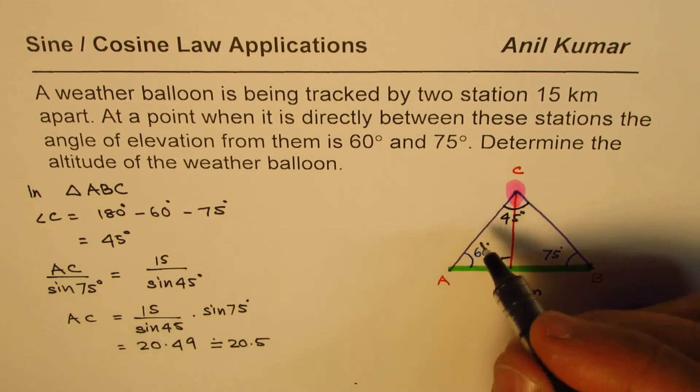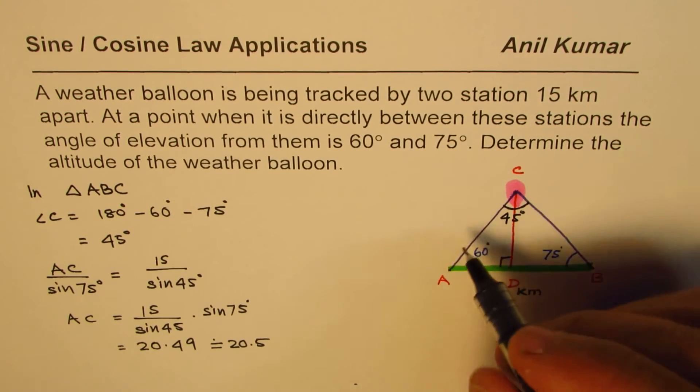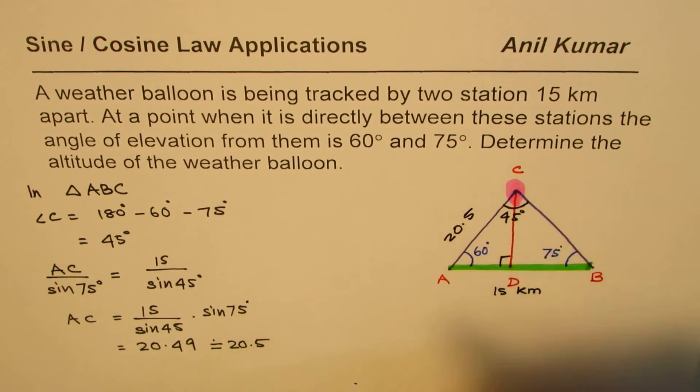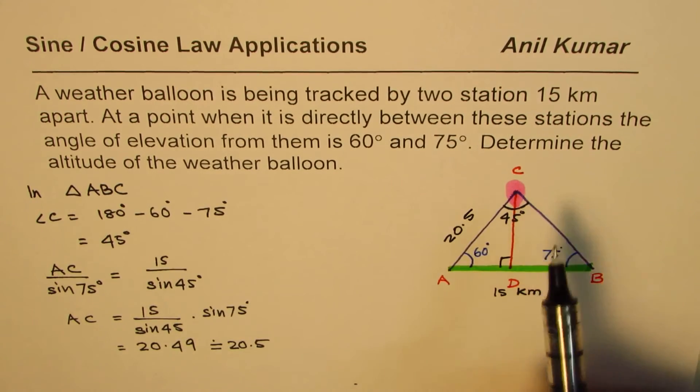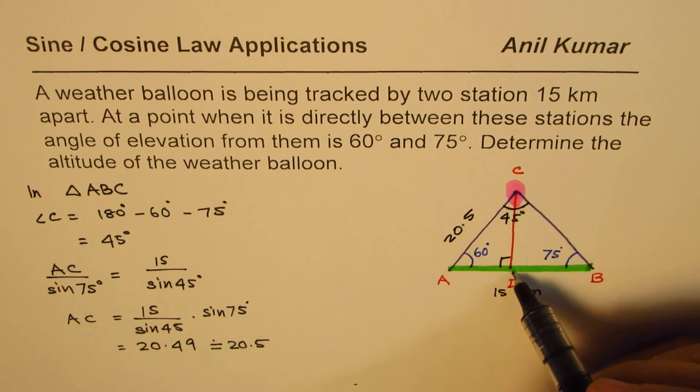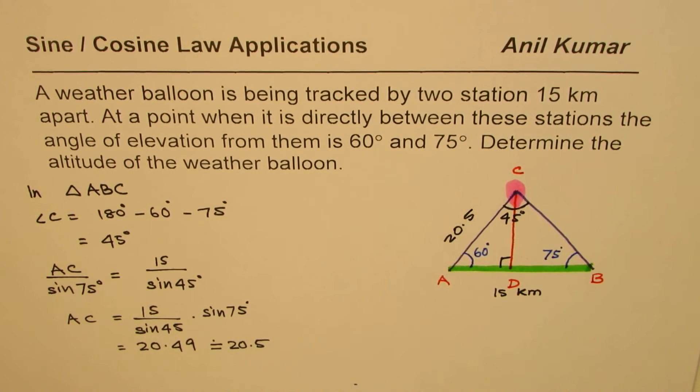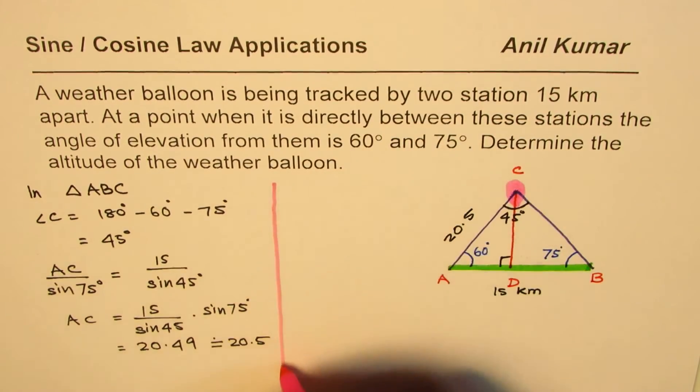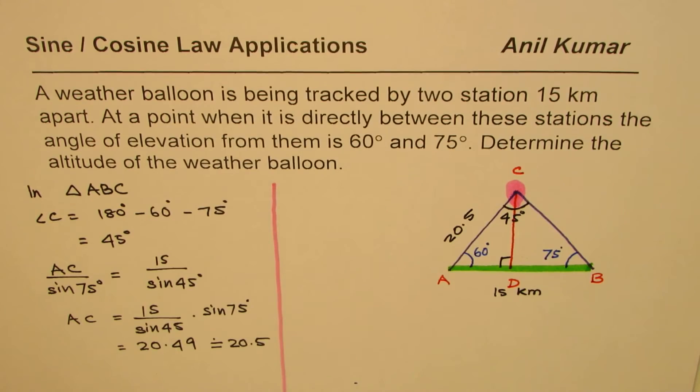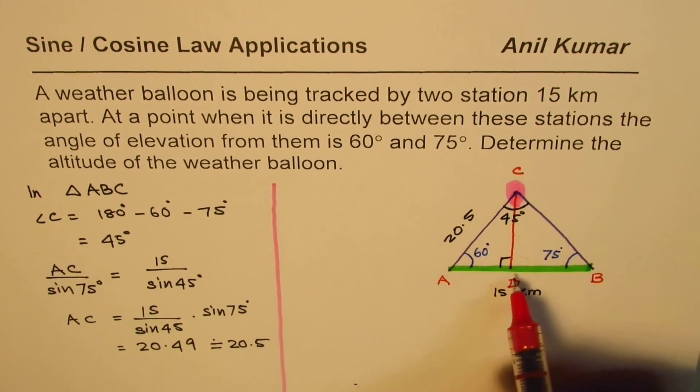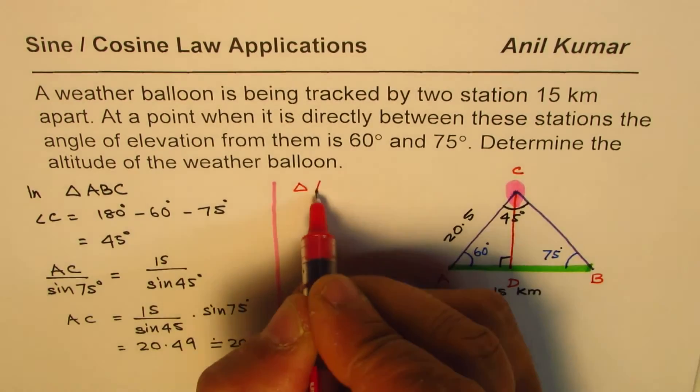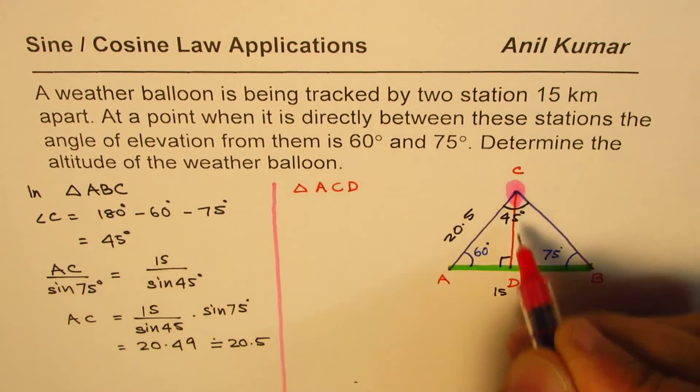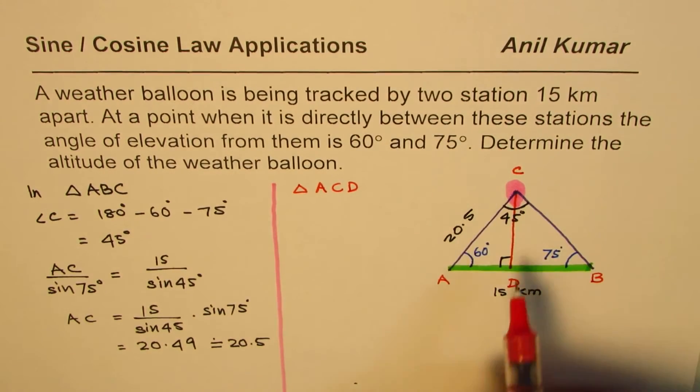Now we got this AC as 20.5. Now we need to determine the altitude, this particular height. Now to find this height, we can use the triangle, the smaller triangle. So now let us use the smaller triangle, which is triangle ACD. Let's use triangle ACD to find CD.